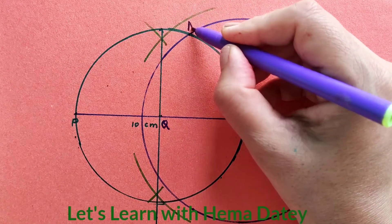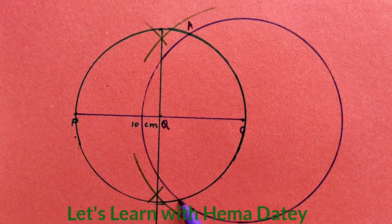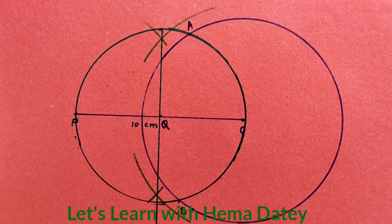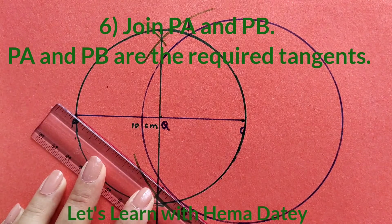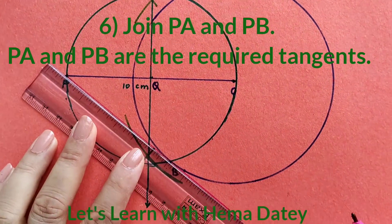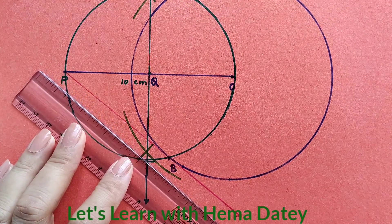Let's give name to these points. This is point A and this is point B. Now we join point P with point B and we get a tangent PB. This is the tangent PB.